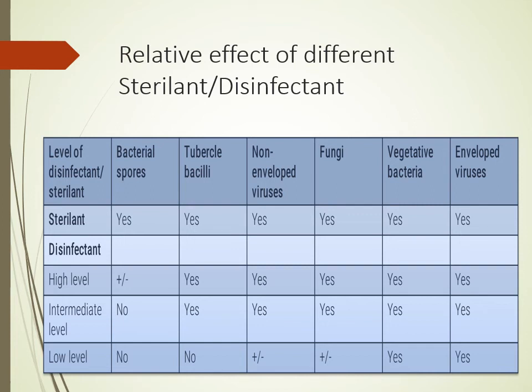This table shows the relative efficacy of different sterilants or disinfectants. An ideal sterilant can destroy bacterial spores, tubercle bacilli, non-enveloped and enveloped viruses, fungi, and vegetative bacteria. High-level disinfectants can destroy these with or without spores. Intermediate-level disinfectants cannot act against bacterial spores but work against tubercle bacilli, viruses, fungi, and vegetative bacteria. Low-level disinfectants act only against vegetative bacteria and enveloped viruses, and may or may not act against fungi or non-enveloped viruses.